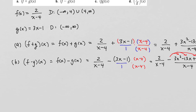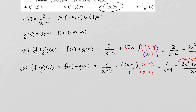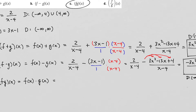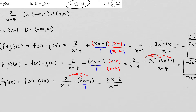Next, we're doing fg(x), defined as f(x) times g(x). f(x) is 2/(x-4) multiplied by g(x) = 3x-1. When multiplying fractions, we just multiply straight across: the numerator is 2 times (3x-1) = 6x-2, and the denominator is (x-4) times 1 = x-4. So fg(x) = (6x-2)/(x-4), and its domain is all numbers except 4.